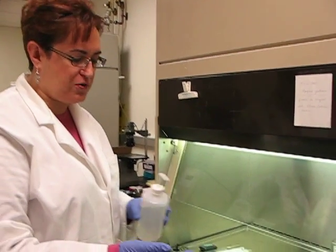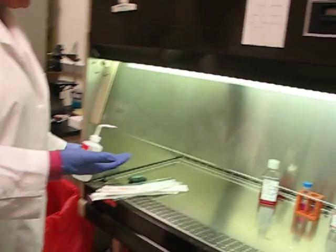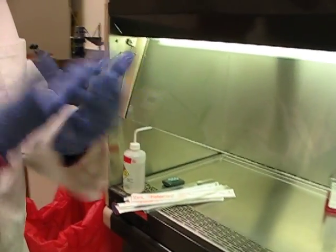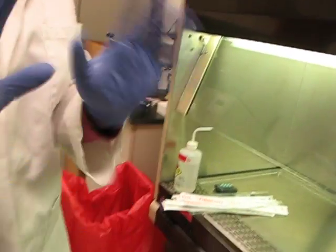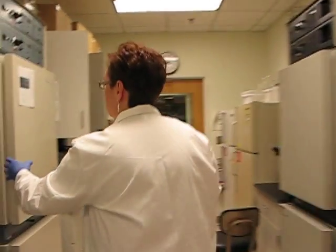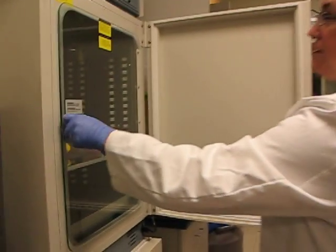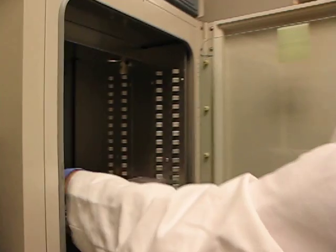We're ready to start subculturing. First thing I do, because we're going to be touching our flasks, is put a little ethanol on my gloves, wet them down, go to the incubator, and grab my flask of cells.